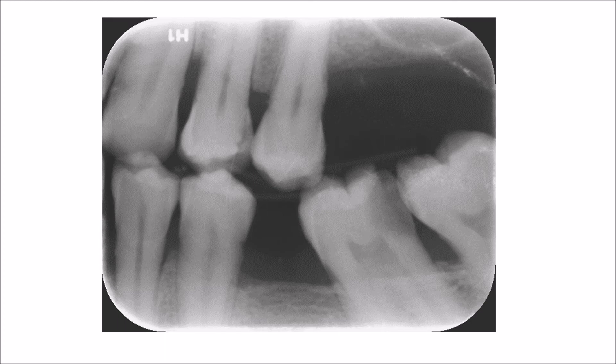In order to have root caries — root caries, by the way, affects the cementum. One condition is that there should be bone loss. In other words, the cementum of the root surface should be exposed to the oral cavity so that it will be affected by the different factors that might cause caries.